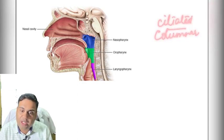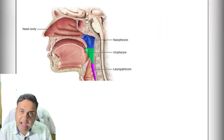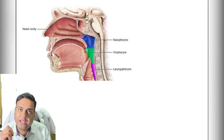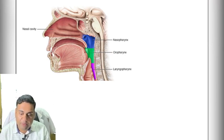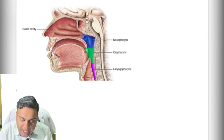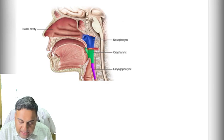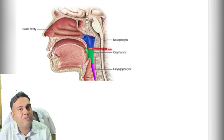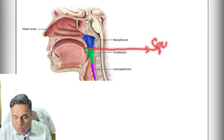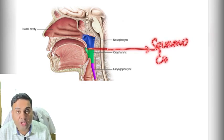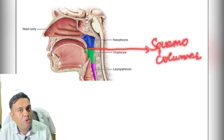The point where ciliated columnar epithelium converts into squamous epithelium — exactly where the nasopharynx converts into the oropharynx — is called the squamocolumnar junction.